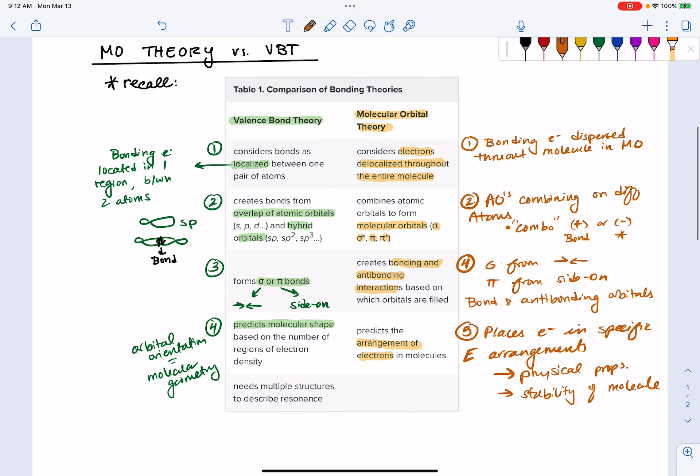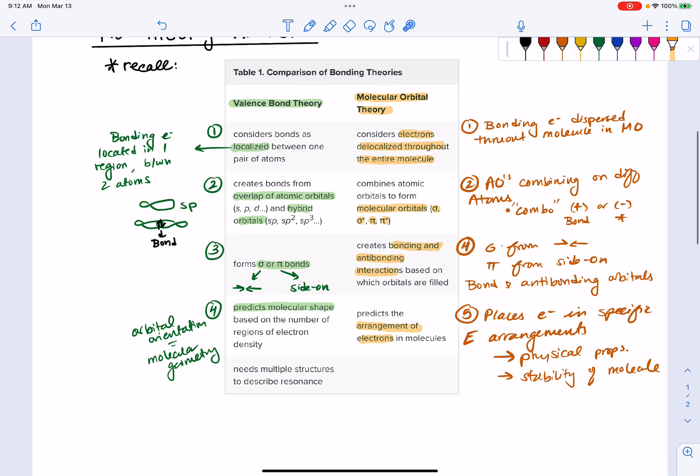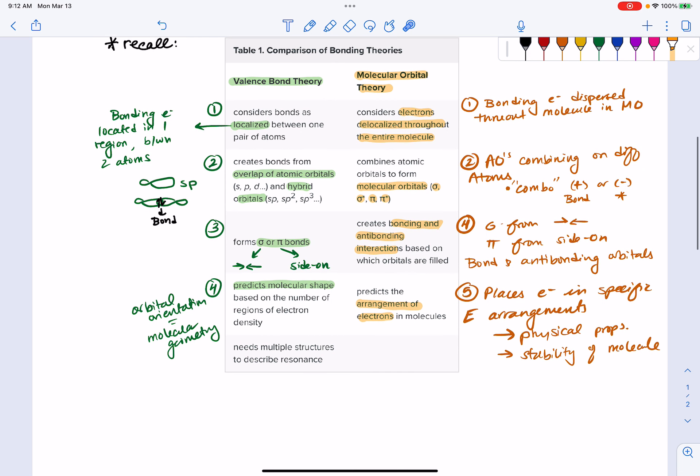So in valence bond theory, we are looking at this idea of bonds still being formed between two atoms as a result of their orbital overlap. And in molecular orbital theory, all atomic orbitals from all atoms are coming together to form these one big molecular orbitals, which are a result of our linear combinations that form either sigma or pi bonding and antibonding orbitals.